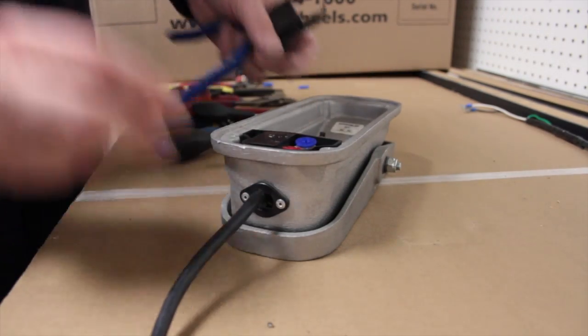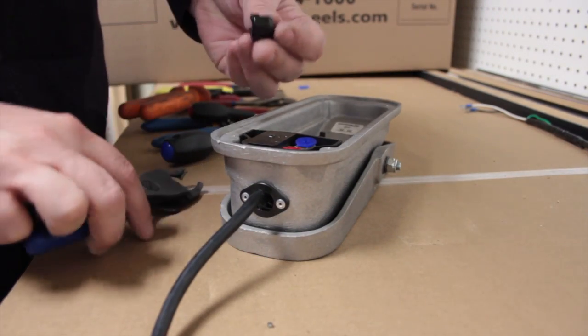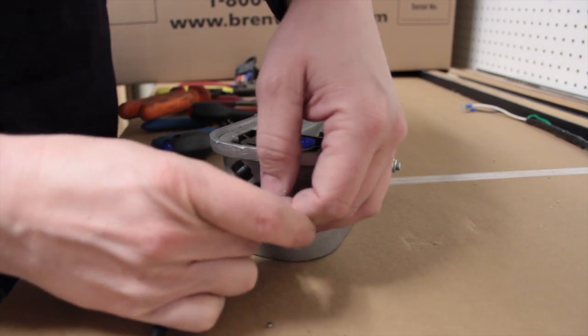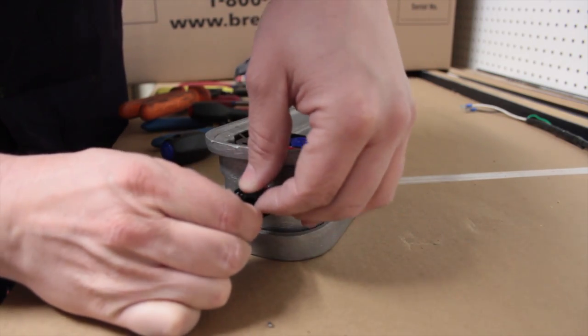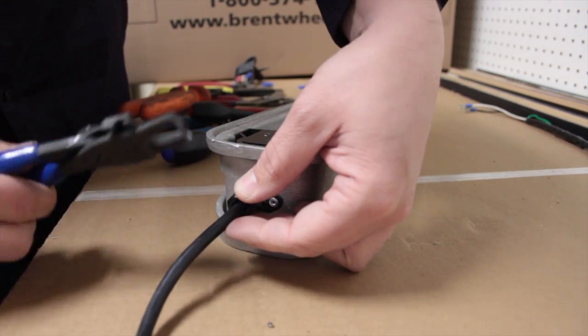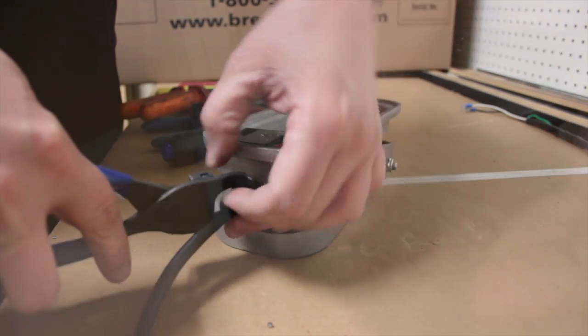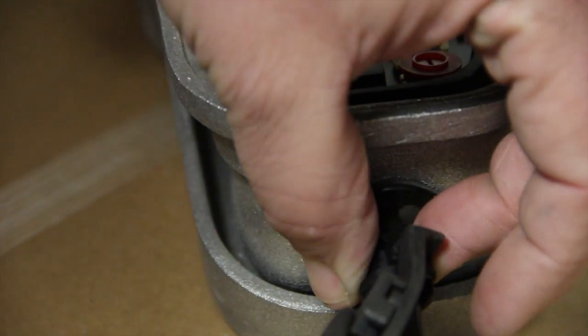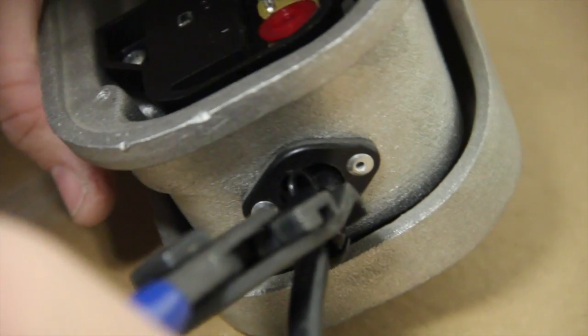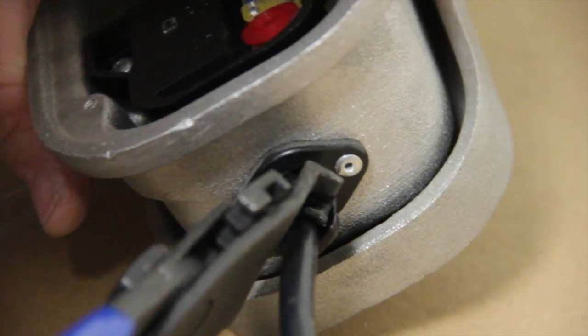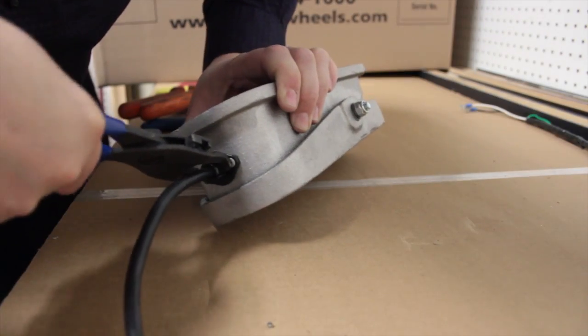Next we're going to put the strain relief back on. You want to try and get it back in the same spot but it doesn't have to be. These are HAKO strain relief pliers, they're made specifically for this but you can use channel locks. This might be a little easier if you have access to them. Hook it in there and give it a little push.